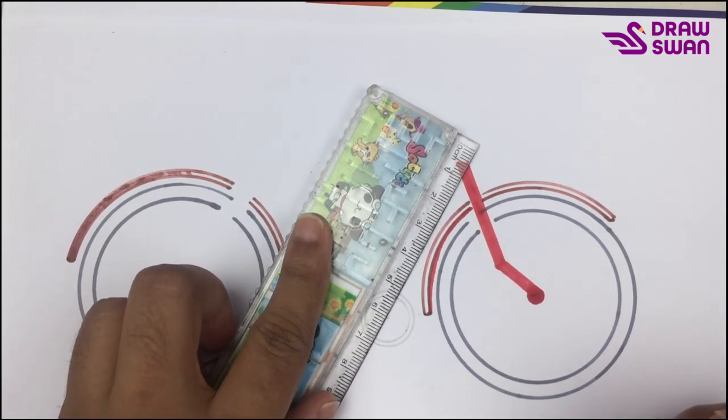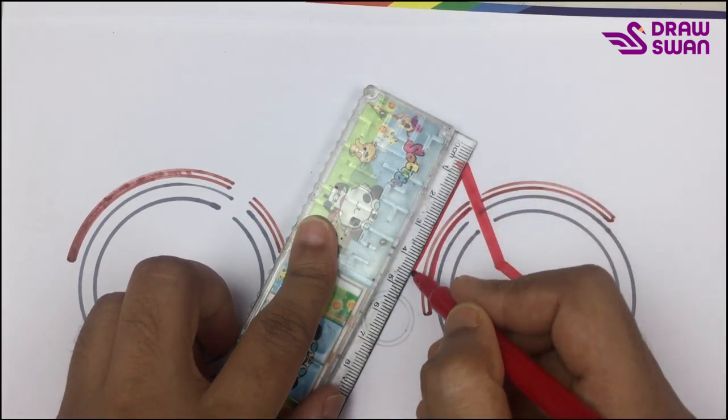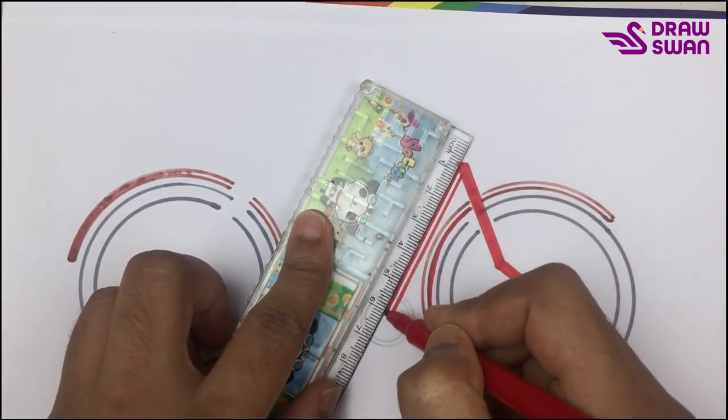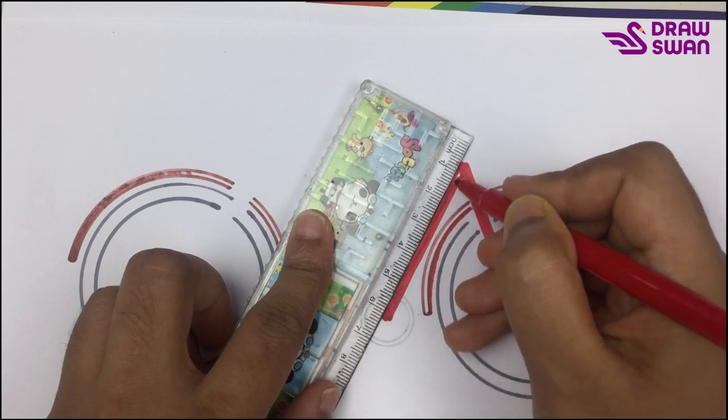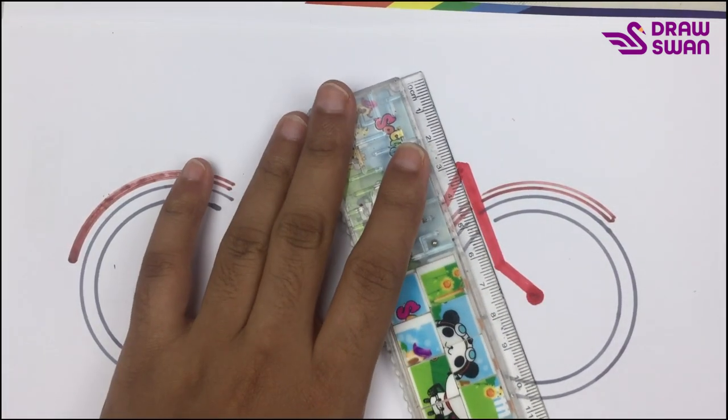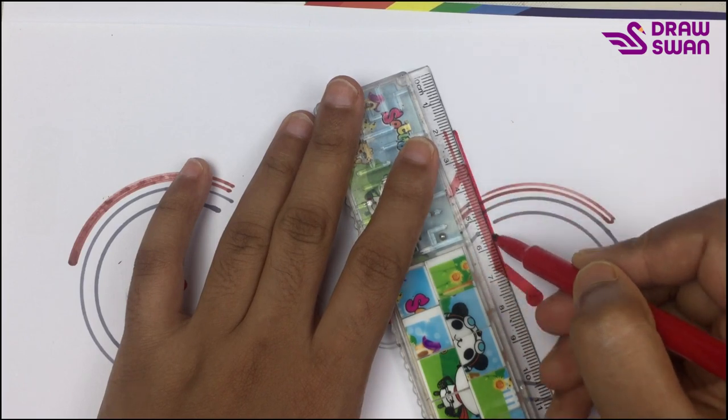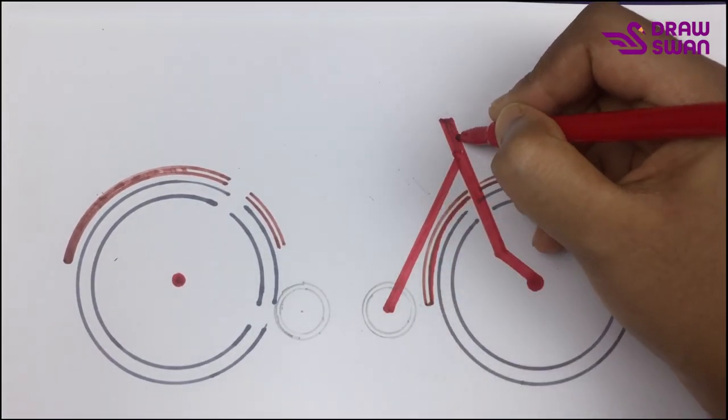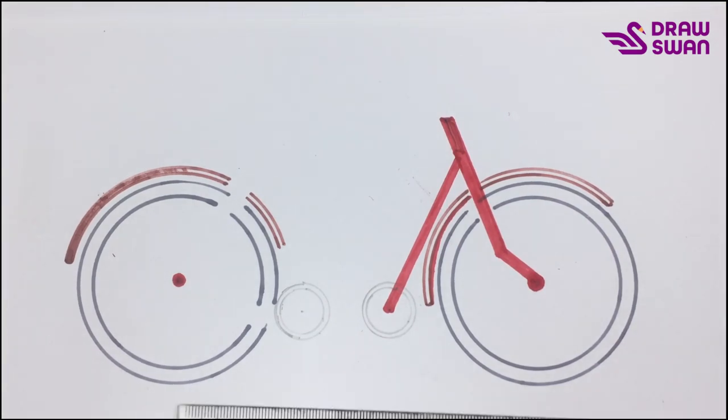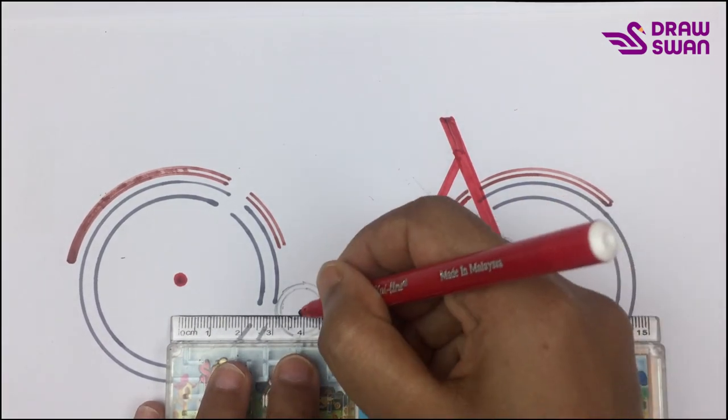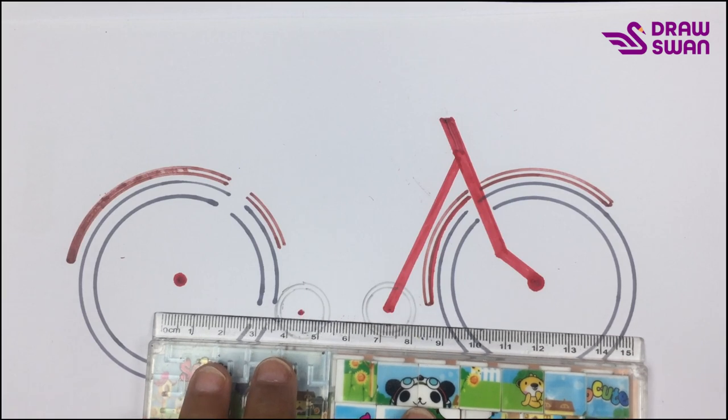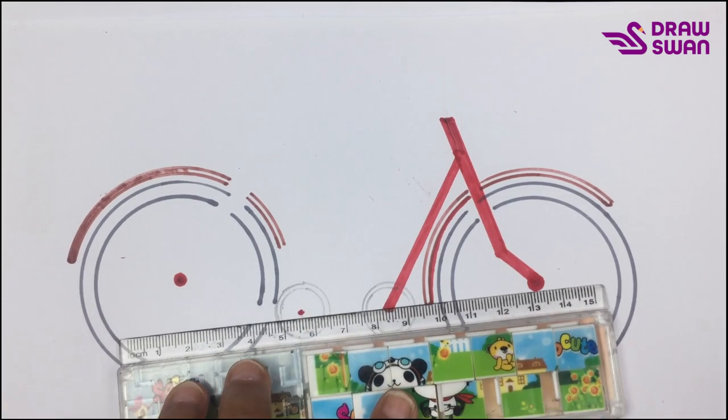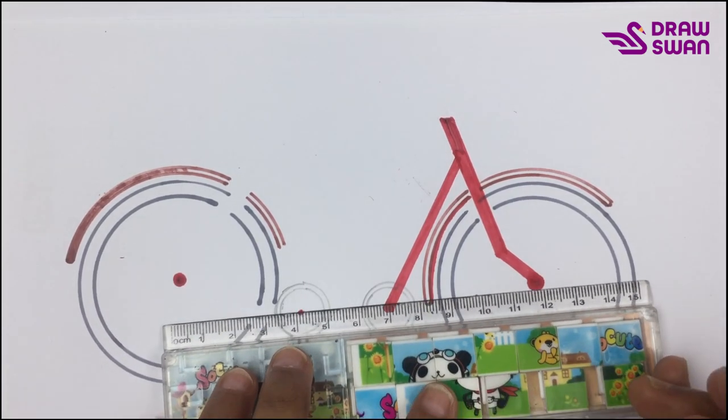So now I'm using my red pen again. Let's draw two more tiny circles.